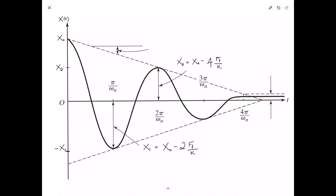At some point, the mass sticks and doesn't slide anymore. The displacement F sub F over K is the so-called spring deflection due to the frictional force. When the displacement falls inside that range, the mass actually sticks and doesn't return to its equilibrium position — there's simply not enough energy in the system to overcome the frictional force.